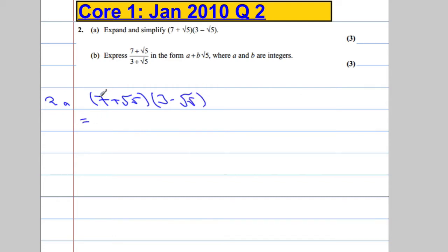Okay, I just expand it like we would any algebraic bracket. 7 times 3, 21. 7 times negative root 5 minus 7 lots of root 5. Root 5 times 3 gives us 3 root 5. And root 5 times negative root 5 is going to be negative 5. Root 5 times root 5 is 5.